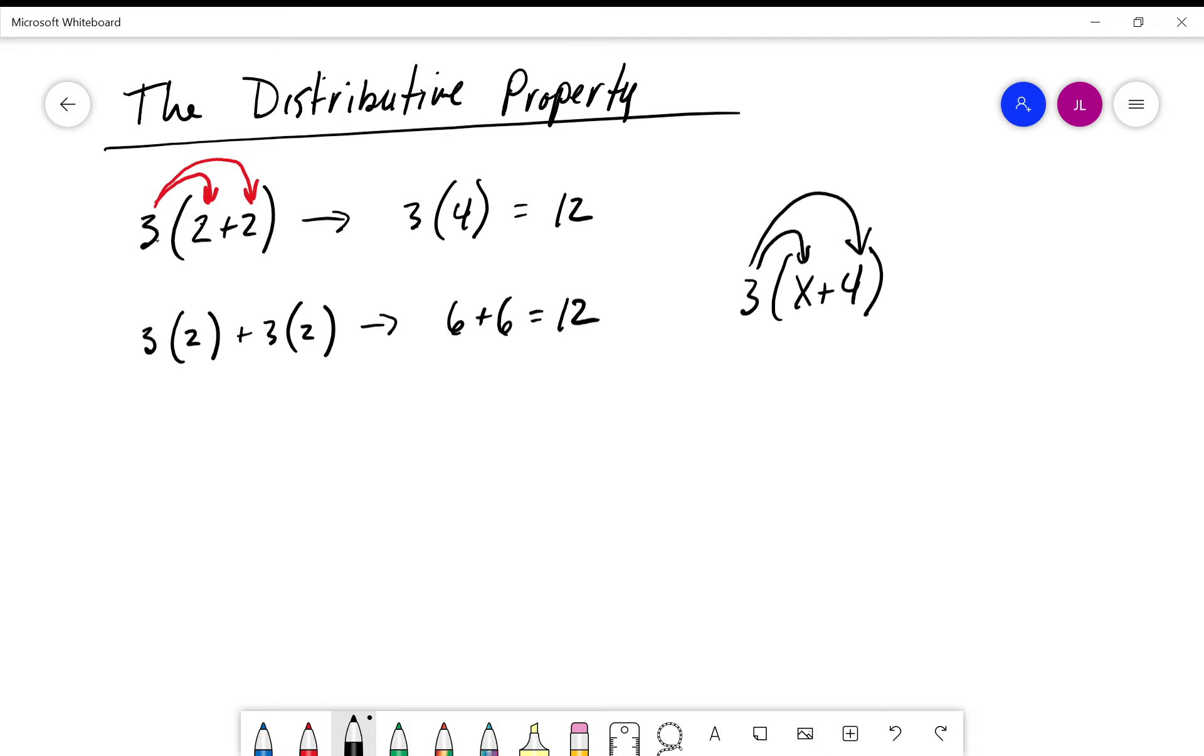Later on, if we find out what x is, we can add those sums together or substitute. We distribute out through this and get 3x plus 12. This is the distributive property, or some people call it the distributive property of multiplication over addition. It's a very important concept in algebra.